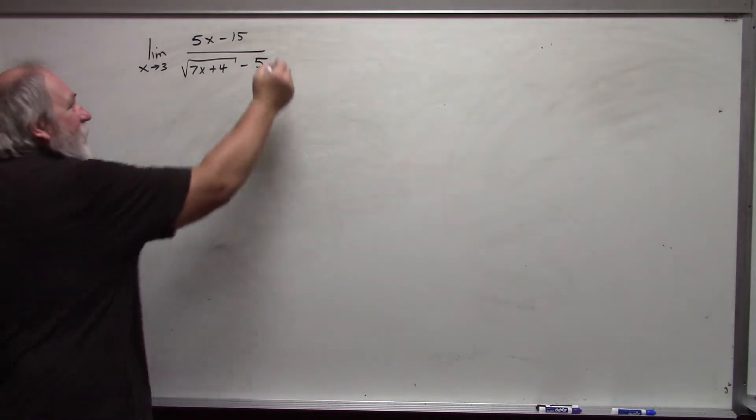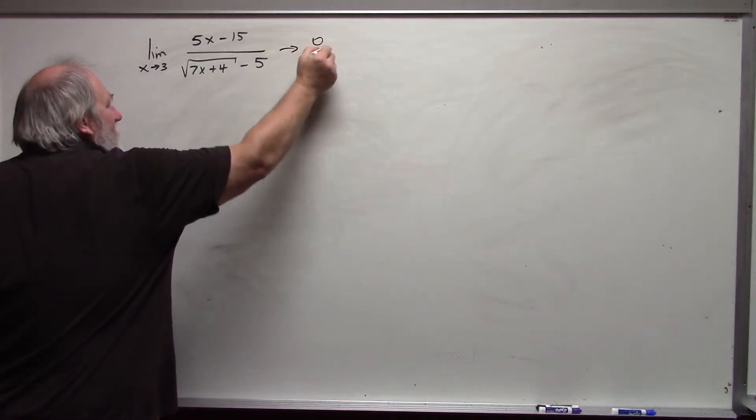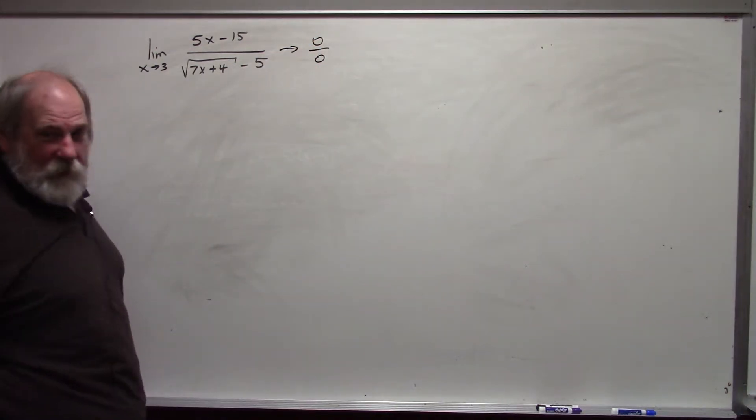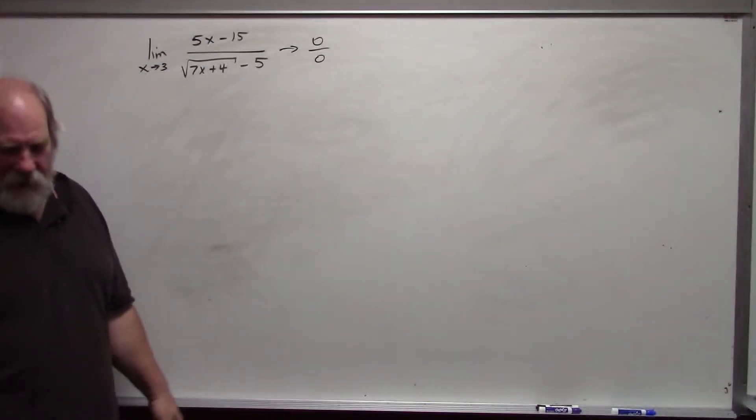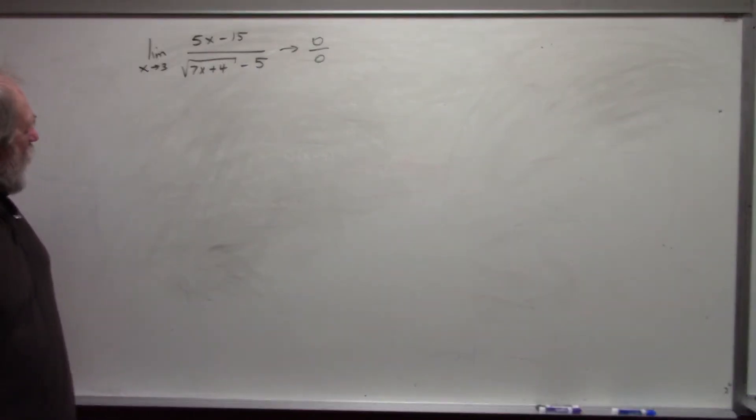And again, this is indeterminate. 0 over 0 form. There are actually 7 indeterminate forms. We will get the other ones later on as we go through the course.